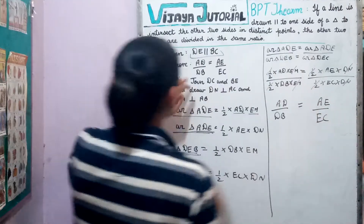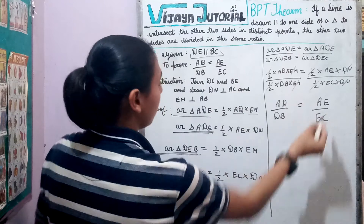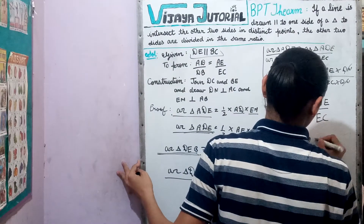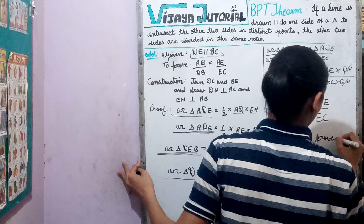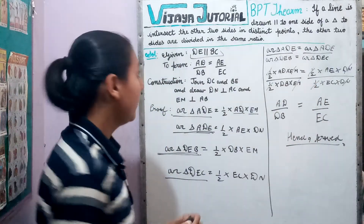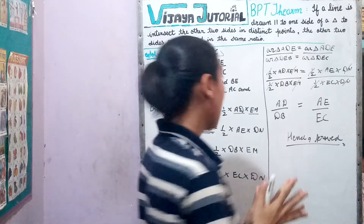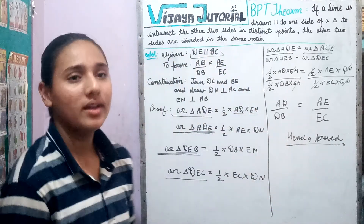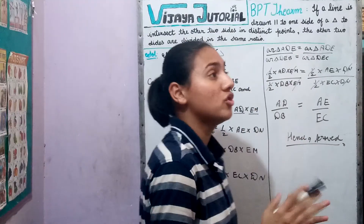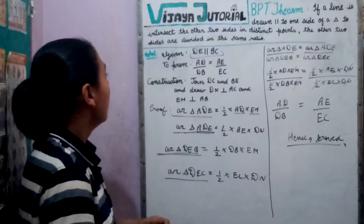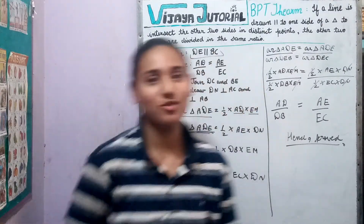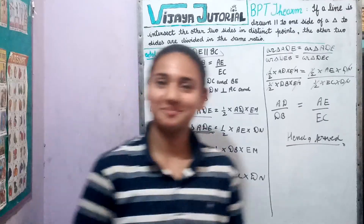We have proved that AD upon DB is equal to AE upon EC. Hence proved. This was the derivation of BPT theorem, which is the first theorem in class 10. There are many numericals based on this theorem, but the derivation can also come in the exam, so it's better to revise it. Thank you, meet in the next video. Bye-bye.